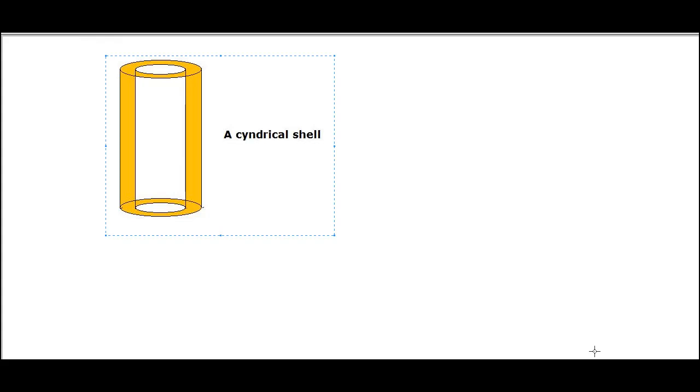We are going to understand how we apply the method of cylindrical shells to compute the volume of a solid of revolution. So this is a cylindrical shell - it's like a cylinder with a hole in it.